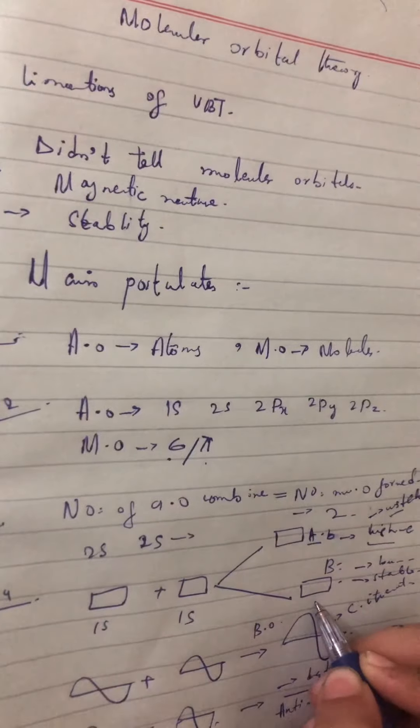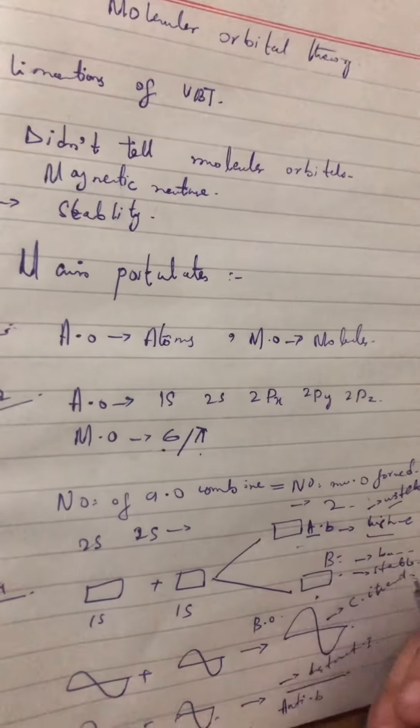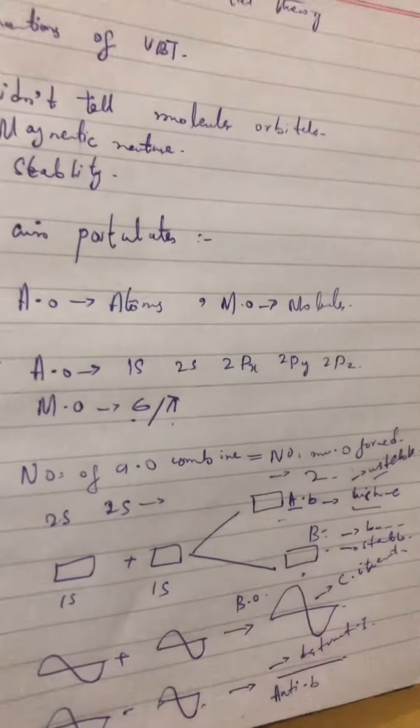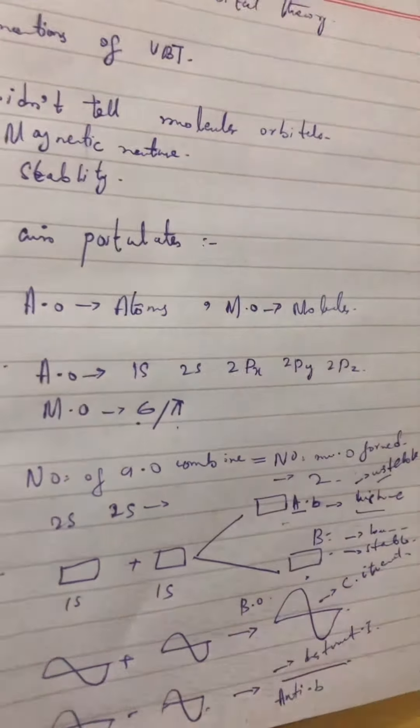The fifth postulate is that when atomic orbitals combine to form molecular orbitals, they must have the same or nearly the same energy and shape.